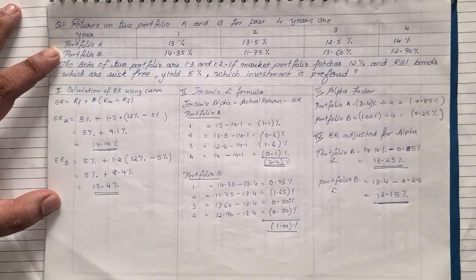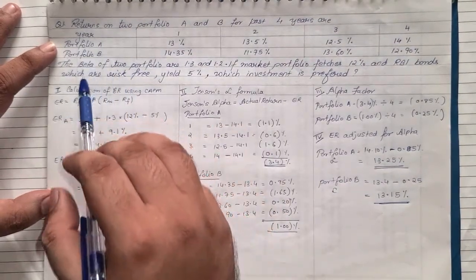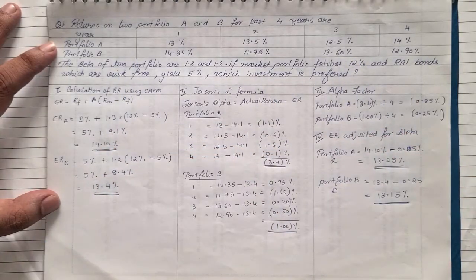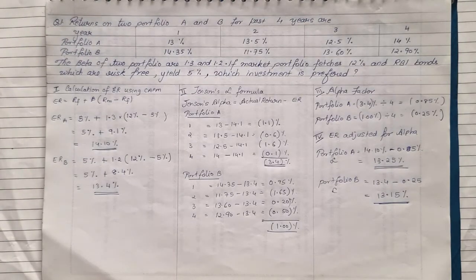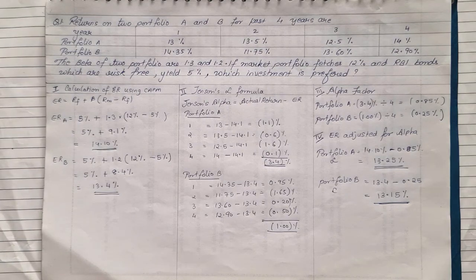This is how you solve the sum when they give you two portfolios with percentage returns, betas, market return, and risk-free return — these are the four steps required. This is the first type of sum under Jensen's alpha. There are two more variations which will be covered in separate videos, so make sure to watch those as well. Thank you.